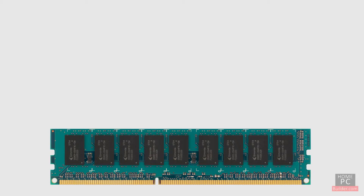To go from speed to bandwidth, you multiply by 8. This is useful to know when you're shopping for RAM and motherboards, since some shops list only speed and other shops list only bandwidth. By multiplying or dividing by 8, you can be sure a motherboard can support the RAM you buy.